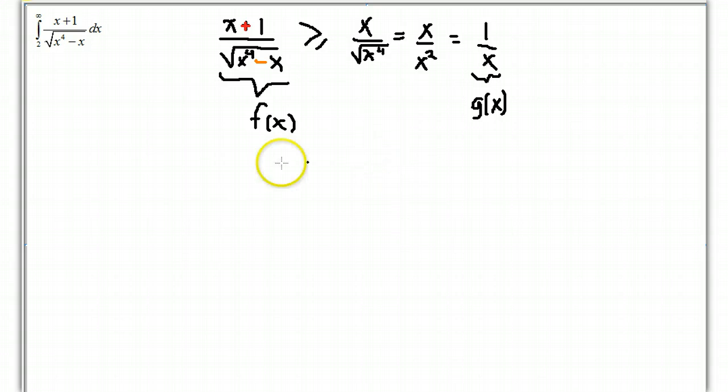The integral from 2 to infinity of g of x is infinite. It's divergent. It's natural log of x from 2 to infinity. It's the limit as b goes off to infinity the natural log of x from 2 to b. And so, it is the natural log of b minus the natural log of 2 as b goes off to infinity. And that's infinite.